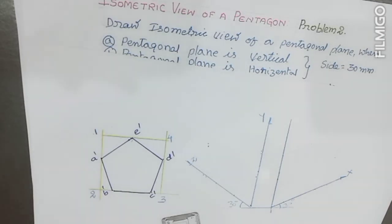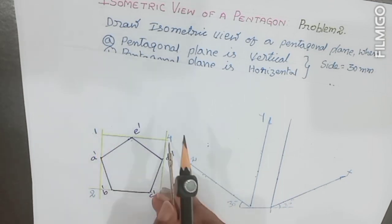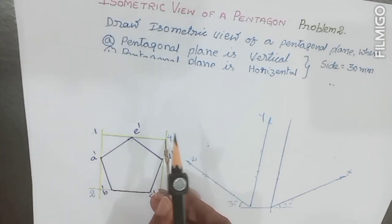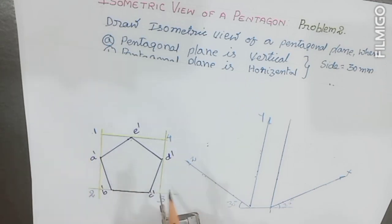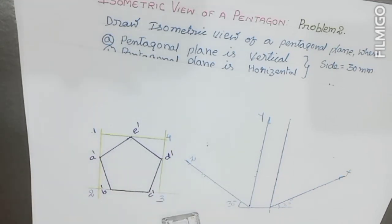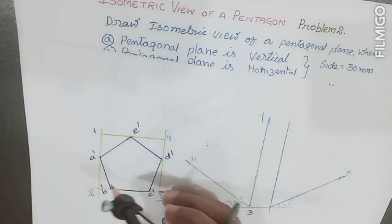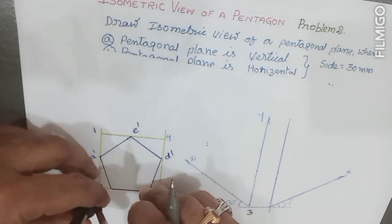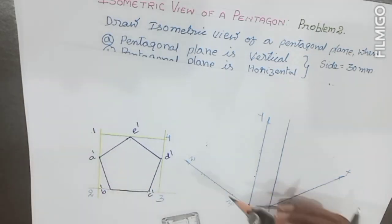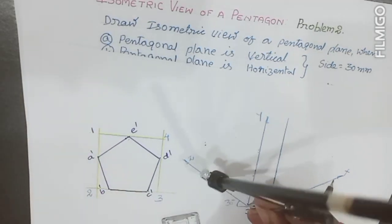In the rectangle, sides 2-3 and 1-4 are horizontal, while sides 1-2 and 4-3 are vertical. Using point 3 as center and 3-2 as radius, draw an arc. Then, using 3-4 as center, draw another arc.